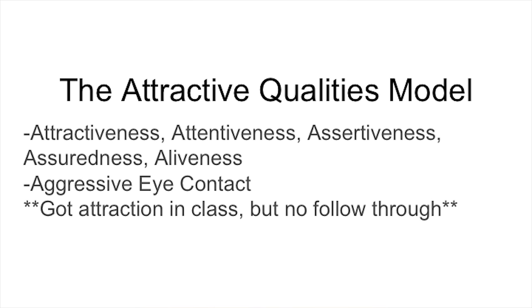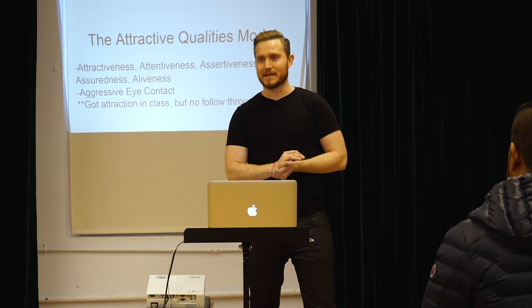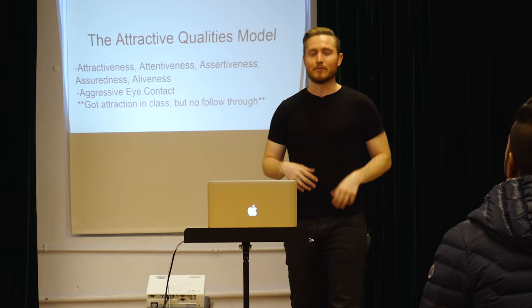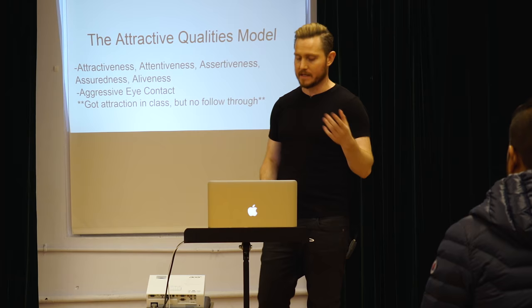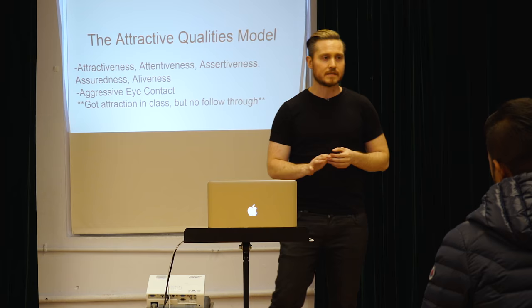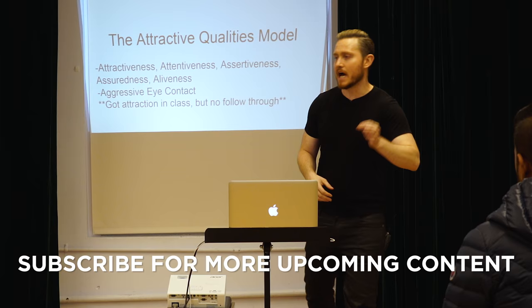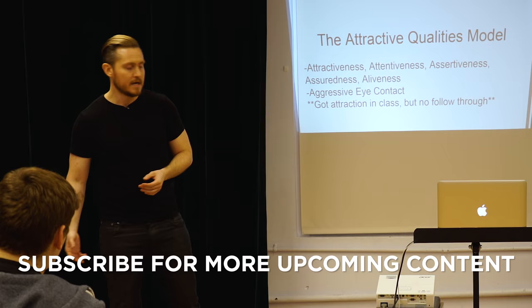The first model is one you've probably never heard of — it's from an obscure book from the 1970s. I found it in my father's collection. Basically, they surveyed hundreds of women to find out what qualities those women liked in men — men they'd dated, men they'd been attracted to — and they boiled it down to five qualities: attractiveness, attentiveness, assertiveness, assuredness, and aliveness.